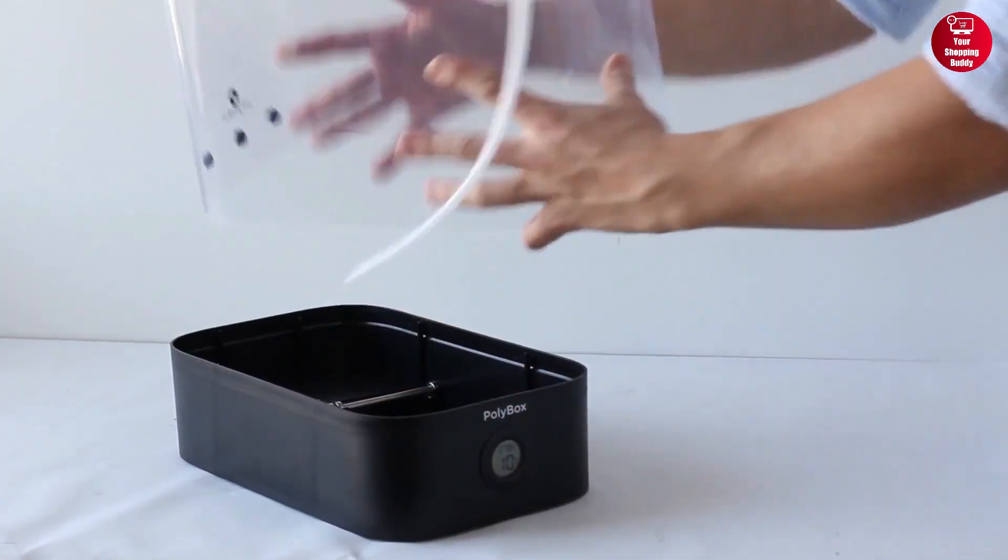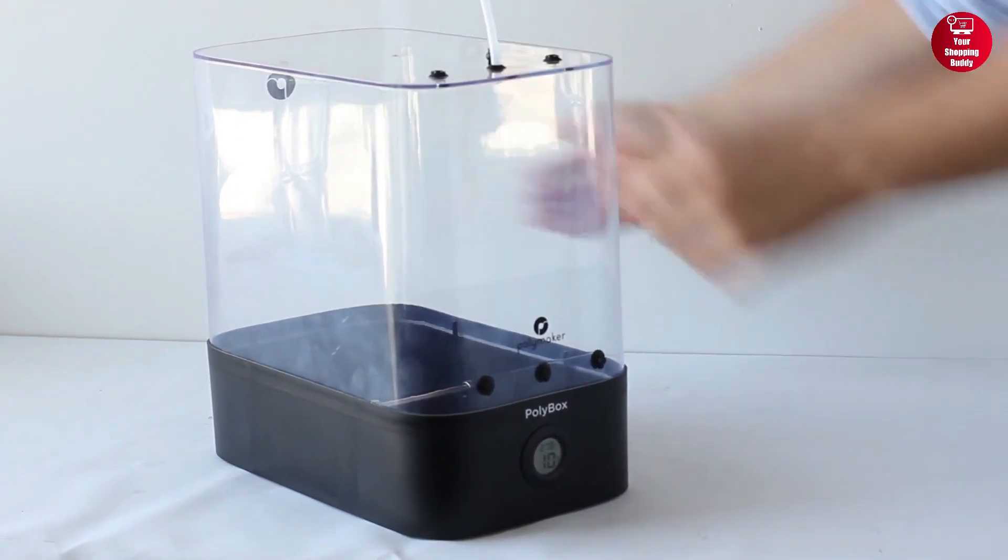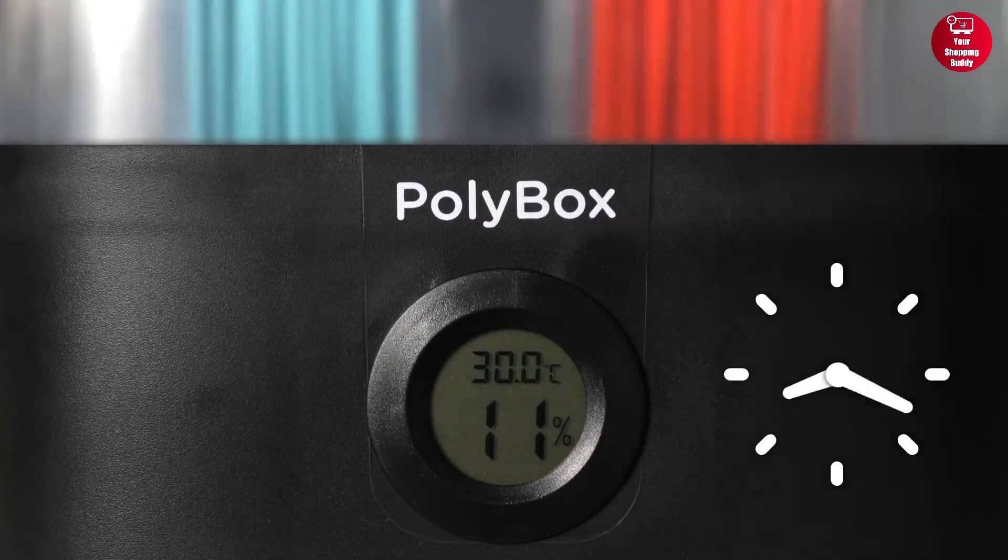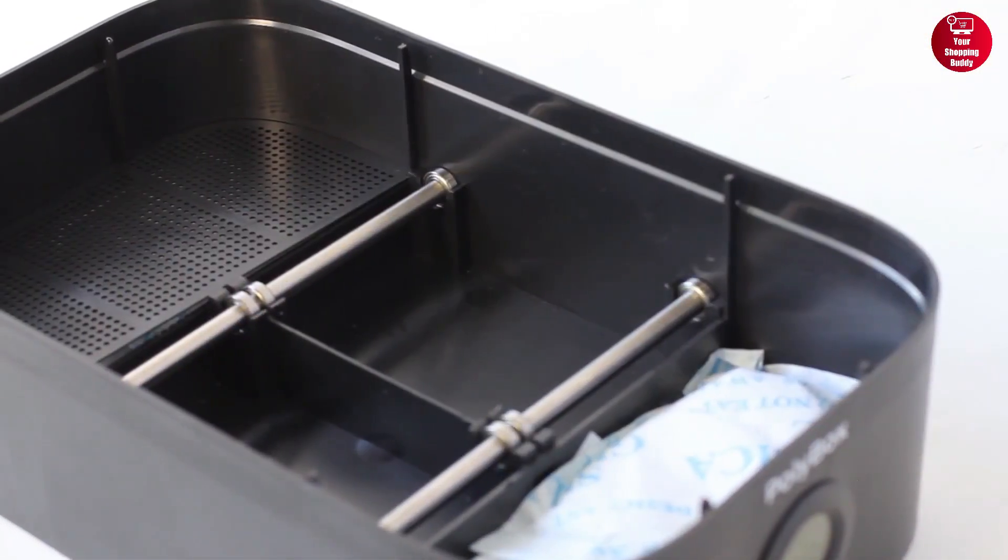The built-in high-precision thermohygrometer allows you to easily monitor the humidity and temperature inside the box, and the humidity is kept below 15% to prevent filament moisture absorption. With slots in both the base and the lid,